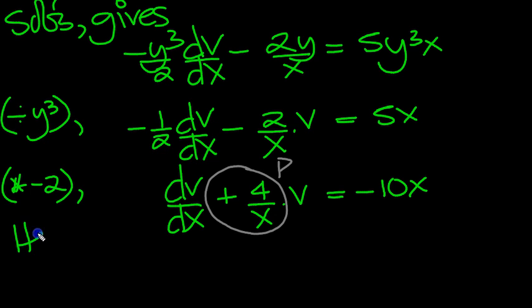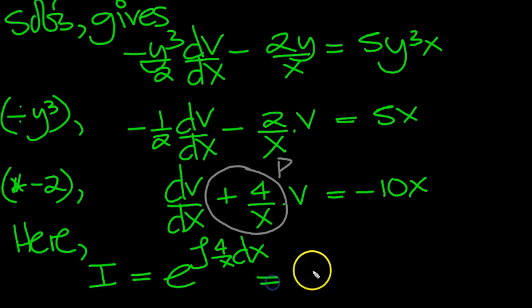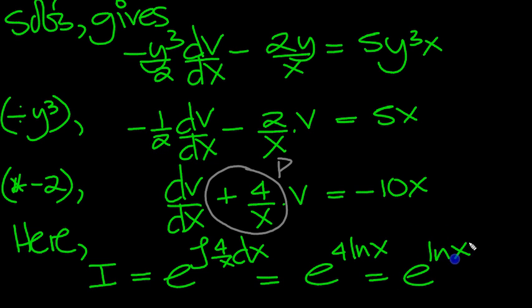So there's p. So here, the integrating factor, i, equals e to the integral p dx. 4 over x dx, which equals e to the 4 lots of ln x, properties of logs, and then x to the 4. And then e and the exponential, e and the logarithm of base e cancel each other out, and we just get left with x to the 4. So we get x to the 4.